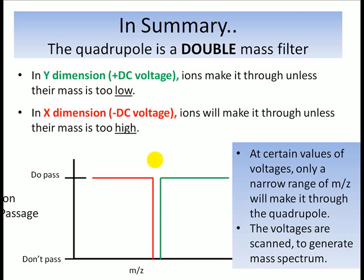So that is the reason why I showed you previously the voltages sort of scanning from low to high over the course of a scan. Thanks for watching and I hope this has given you some conceptual idea of the way a quadrupole mass filter works.